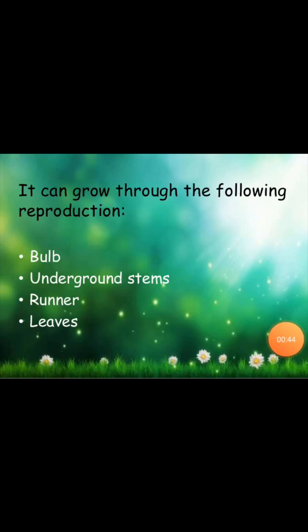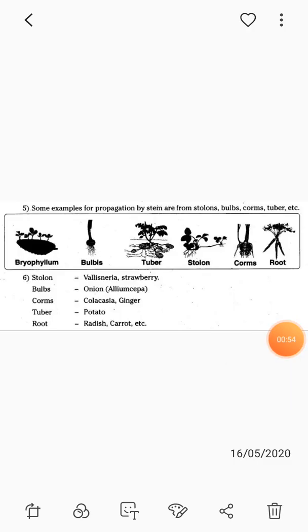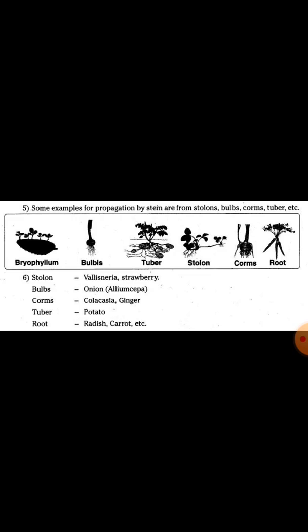This class covers reproduction in stem. Generally it can grow following these reproductions: bulb, underground stem, runner, and rhizomes. Some examples of vegetative reproduction by stem - for underground stem, classified as underground stem, aerial stem, and sub-aerial stem - you learned this in the 11th standard for plant morphology. These are all modified parts.